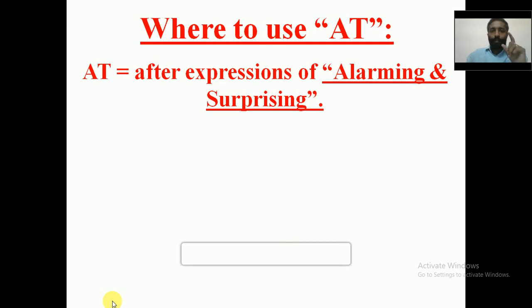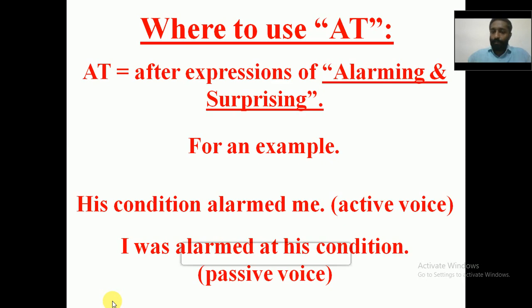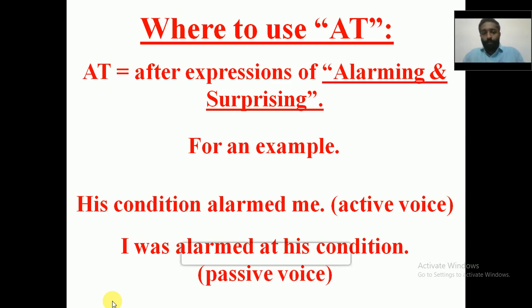The first one is 'at'. Where do we use it? 'At' is used after expressions of alarming and surprising. So instead of the word 'by', we use 'at' when the expression indicates alarming or surprising. For example: 'His condition alarmed me.' When converting into passive voice, it becomes: 'I was alarmed at his condition.' — not 'by his condition', but 'at his condition'.